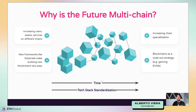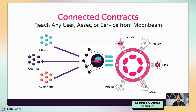As the tech stack gets standardized over time, we think we'll see chain specialization — blockchains very good at one specific thing — and also scale-out strategies for gaming and EVMs. We're actually seeing this in Polkadot where the Moonsama project is going to launch its own parachain focused on gaming and EVM. This will once again create a very fragmented set of users, assets, and services.